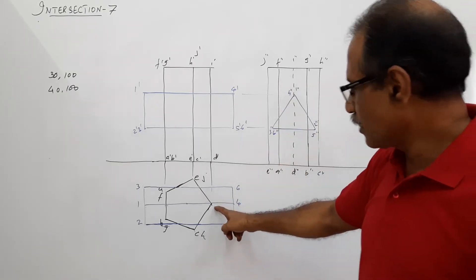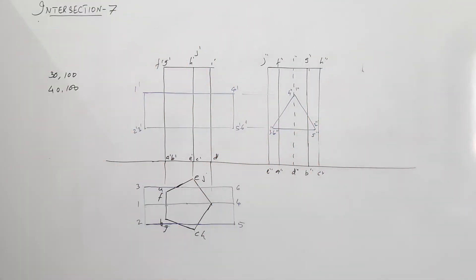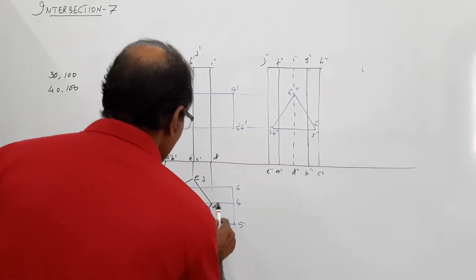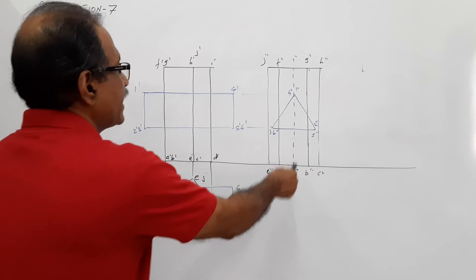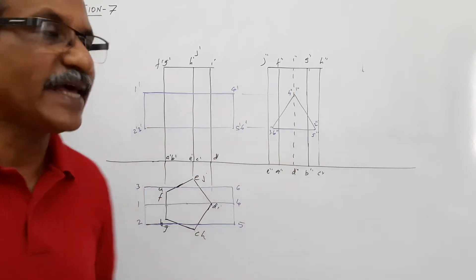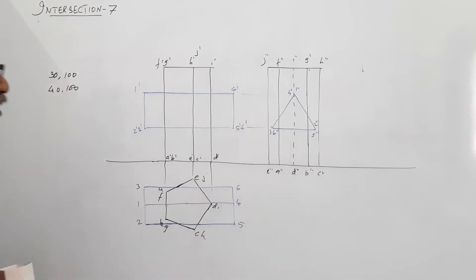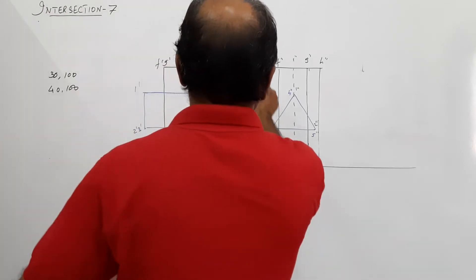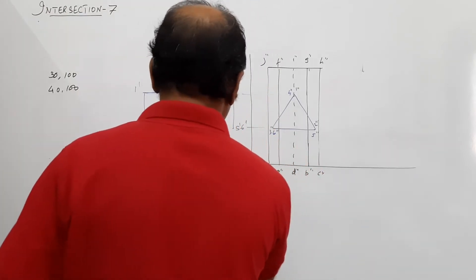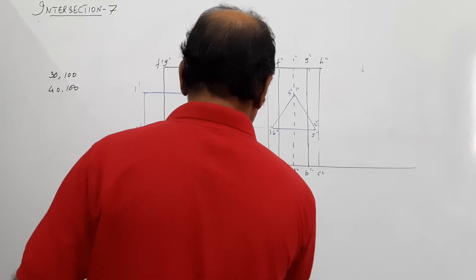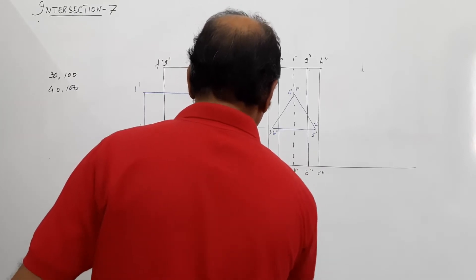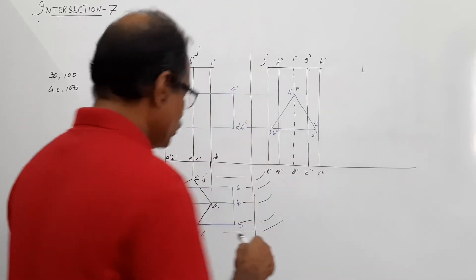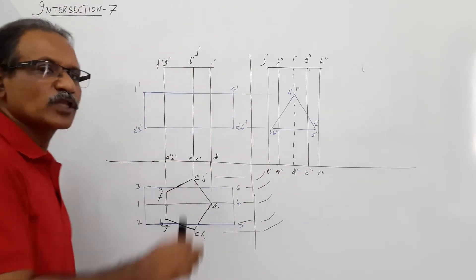The points D and I will coincide with the axis. You can draw this by following the standard procedure — project all these points, draw arcs, and continue. I am not completely drawing it here; you have to follow the procedure.